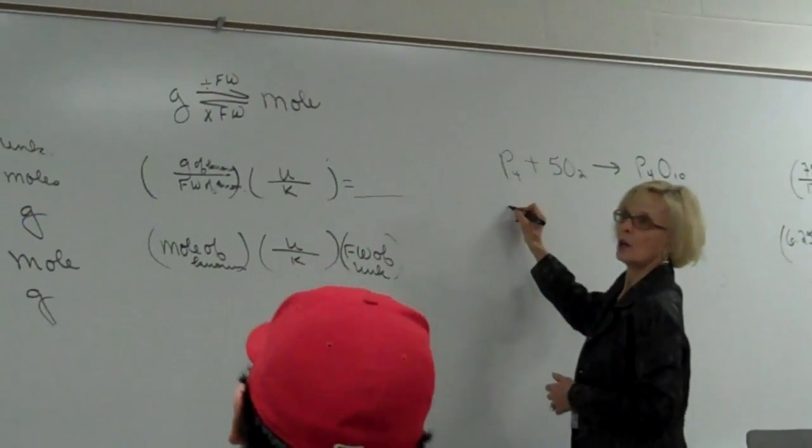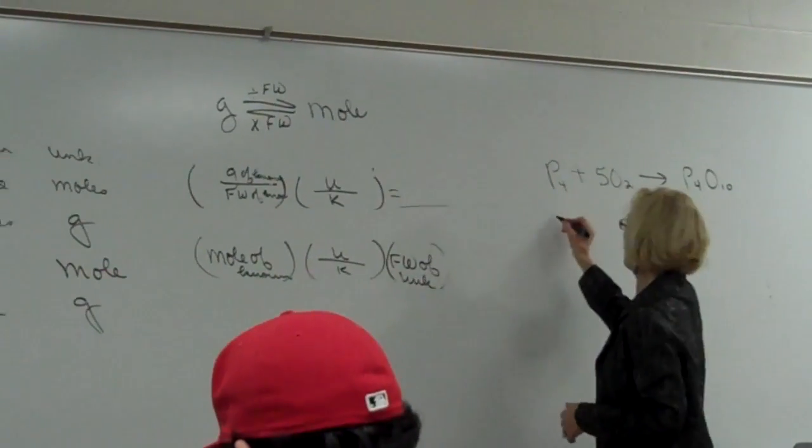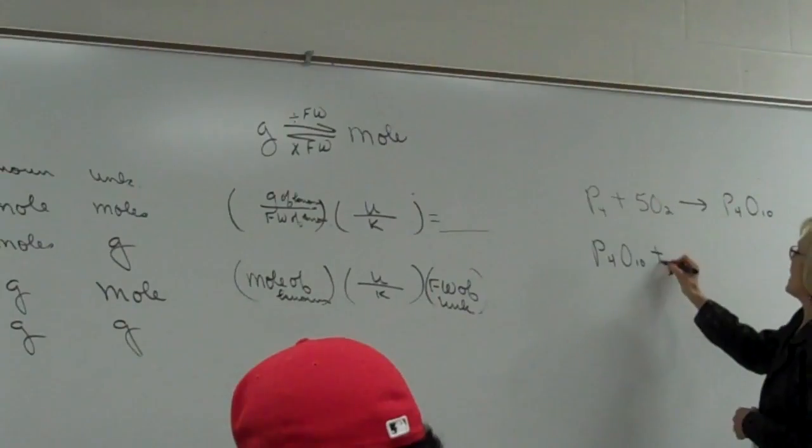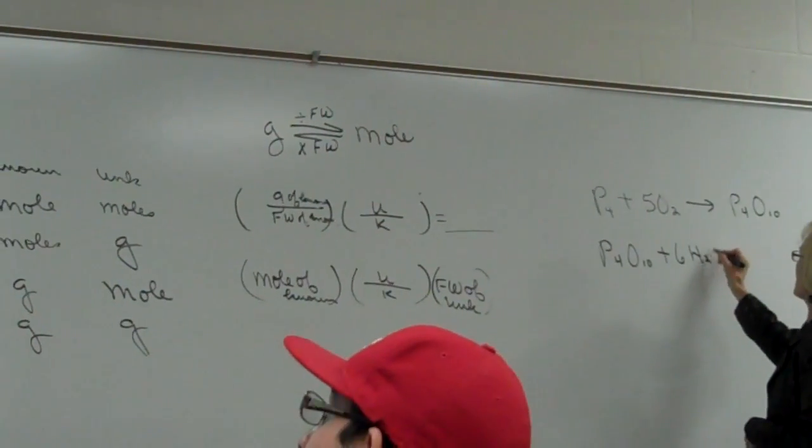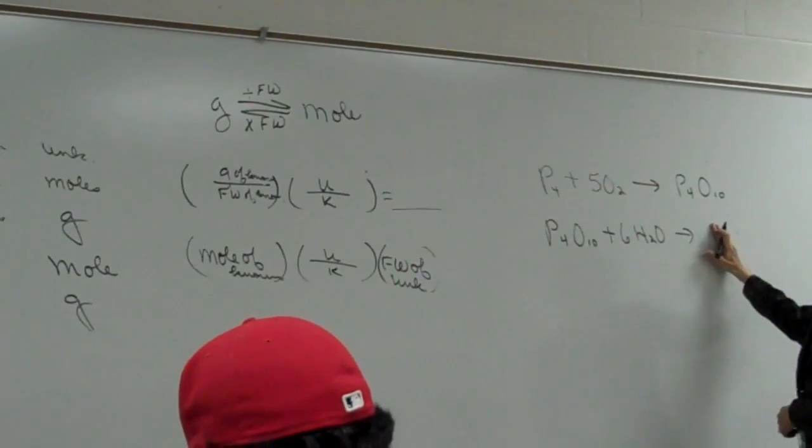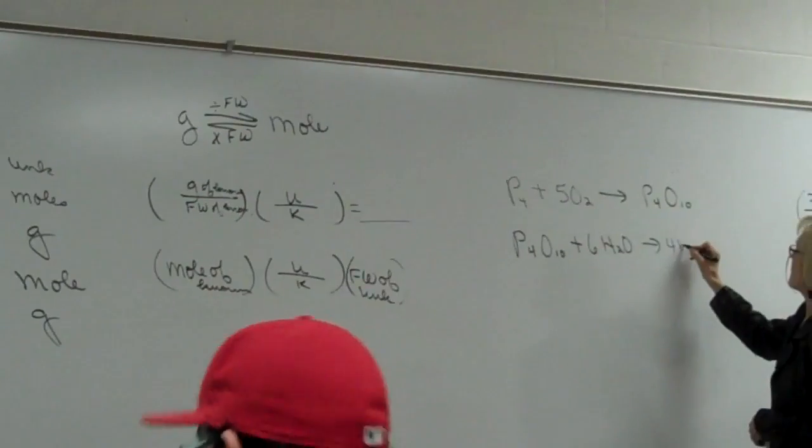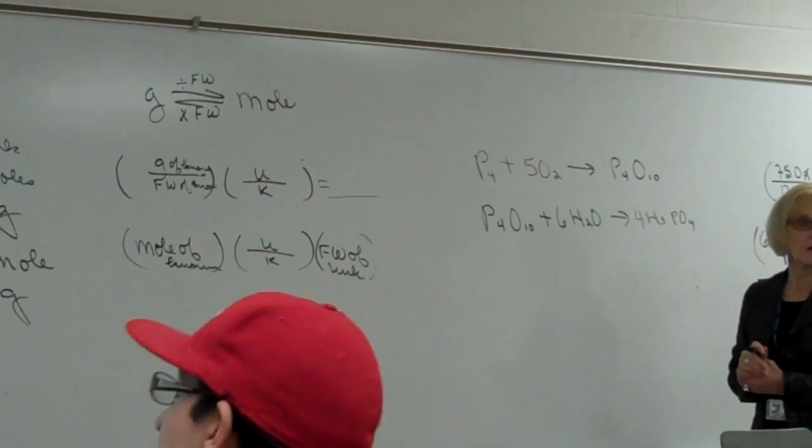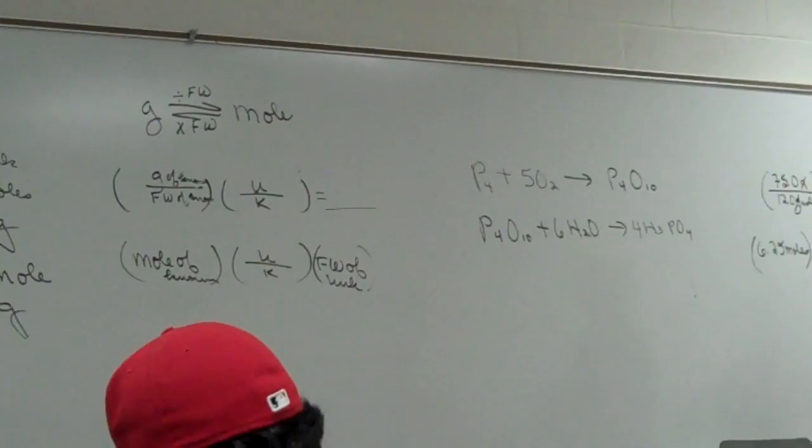We get P4O10. Then for our second one, we're going to take the P4O10 and react this one with water. That gives us phosphoric acid. So we have our two balanced equations.